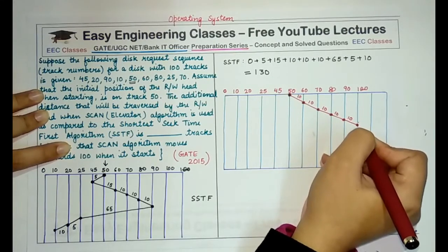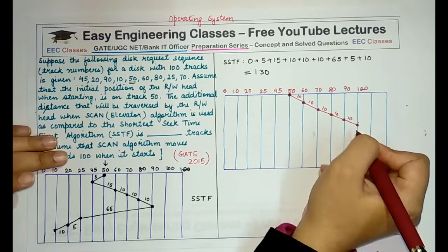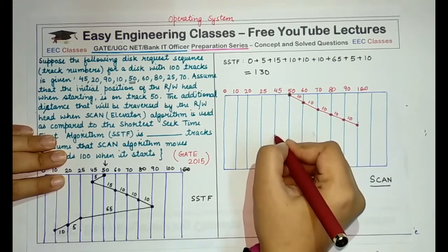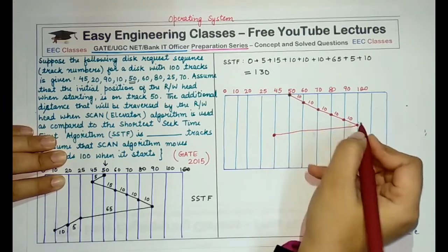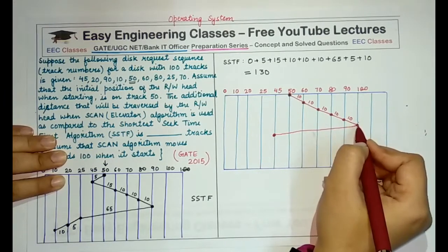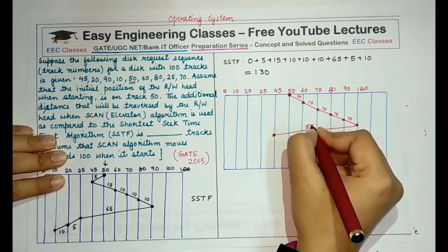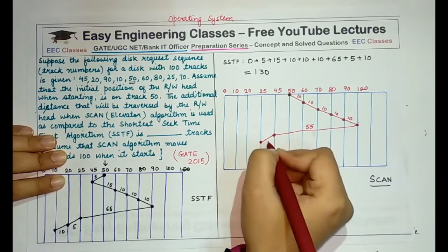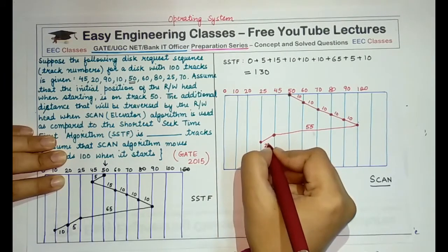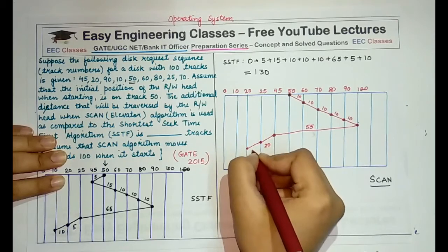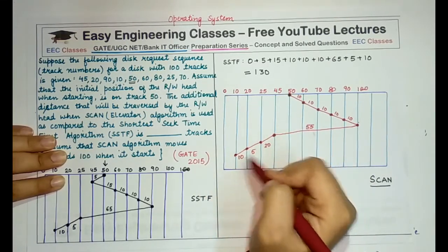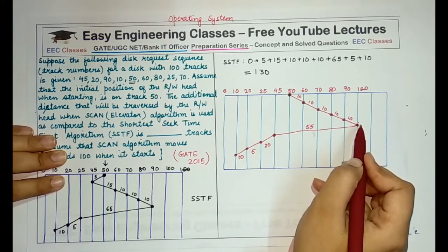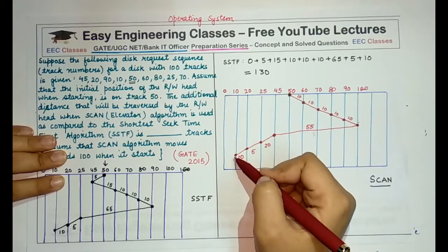Now it reverses its direction and services in the opposite direction. So from 90, it will come to this point, which is 45. So it comes here and services this request. So 100 minus 45 is 55. From 45, it will go towards the left and service all the requests. So this is 20, then 25, and then towards 10, and it goes till 10. And it will stop here because there are no more requests. Here it reached the end because there were more requests to service. Here it will stop at the last request.